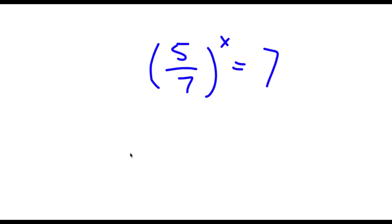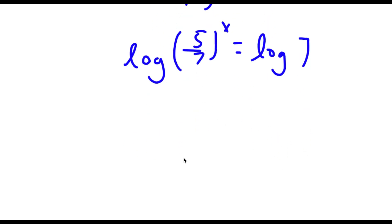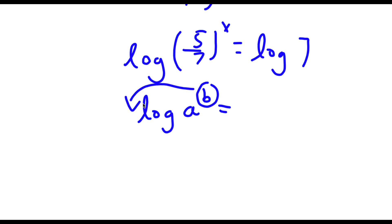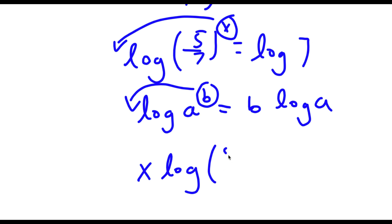Now I'm going to take the log on both sides, so log of 5 over 7 to the power of x is equal to log 7. Now if I have something in the form log a to the power of b, I can actually move this exponent b to the front of the logarithm, so this will equal b times log a. So I can move x to the front: x times log of 5 over 7 is equal to log 7.